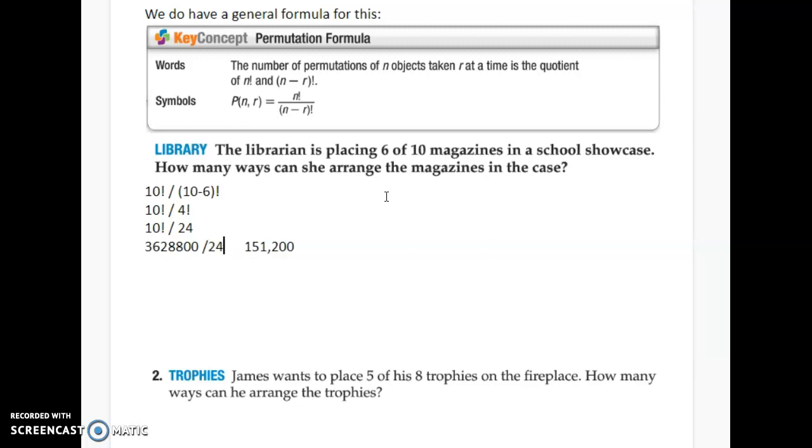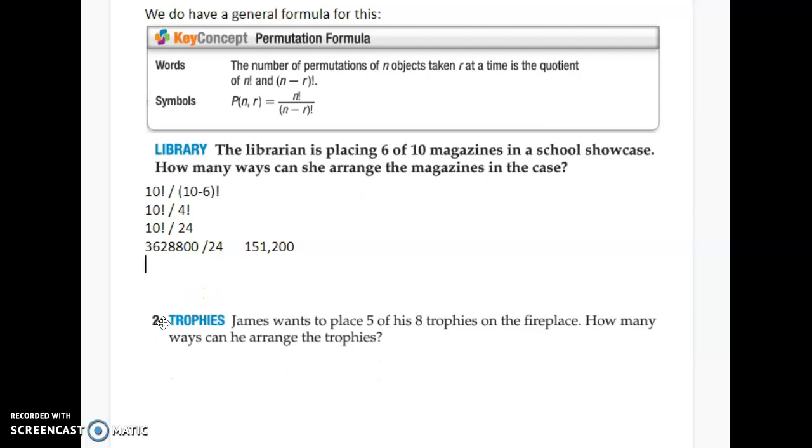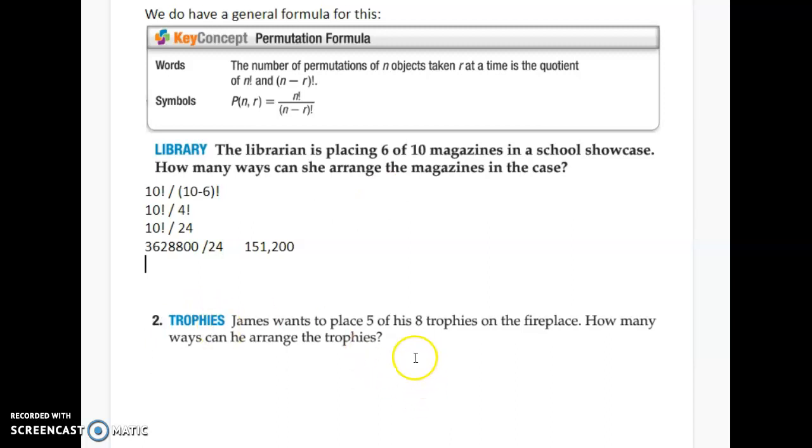Fill in some of my work there. One more example of that. James wants to place five of his eight trophies on the fireplace. When I said in the fireplace, how many ways can he arrange the trophies? So, again, how many do we have total? Divide that by eight, oops, eight minus that five. And exclamation point, five minus eight we know is three.